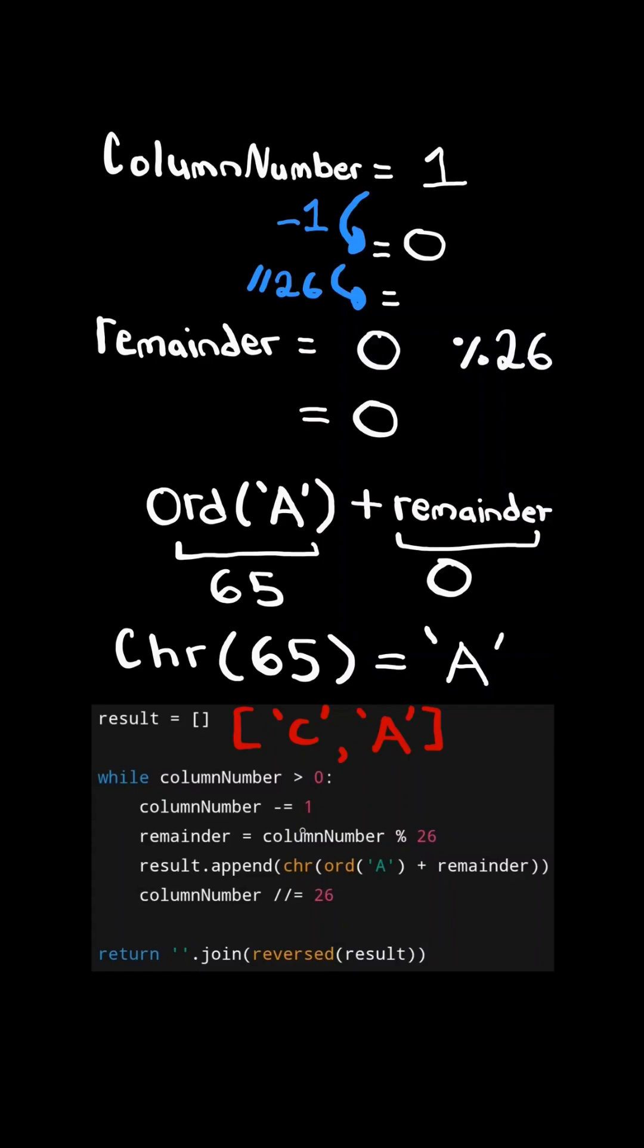Fast forward, in this iteration, the character is A, so we append it to the list, and integer division column number by 26.